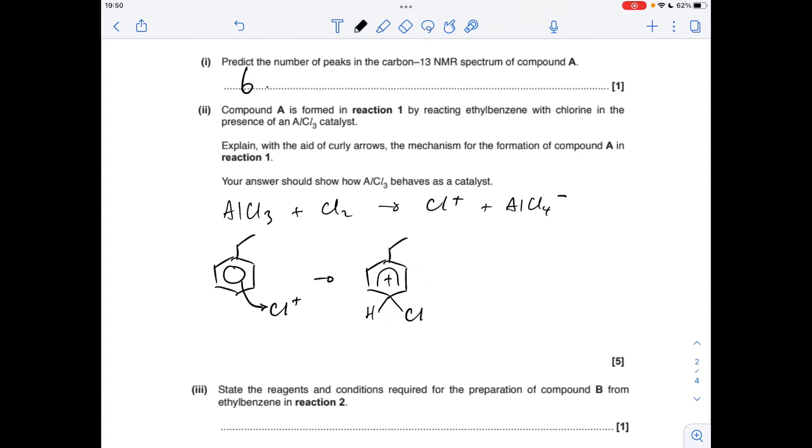And we take a curly arrow from the C-H bond back in to reform the delocalized ring of pi electrons. That's going to give you a product and an H plus ion. And all that you do to show that the AlCl3 behaves as a catalyst is react that with that, make the AlCl3 back, and we get an HCl molecule as well.